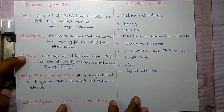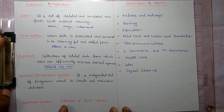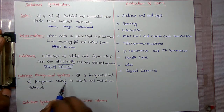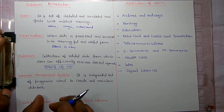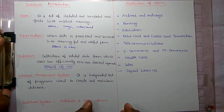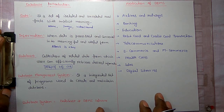If you search on Flipkart, that is the retrieving of information. Database management system is an integrated set of programs used to create and maintain a database. With programs like Oracle or SQL, you can create and maintain a database management system.